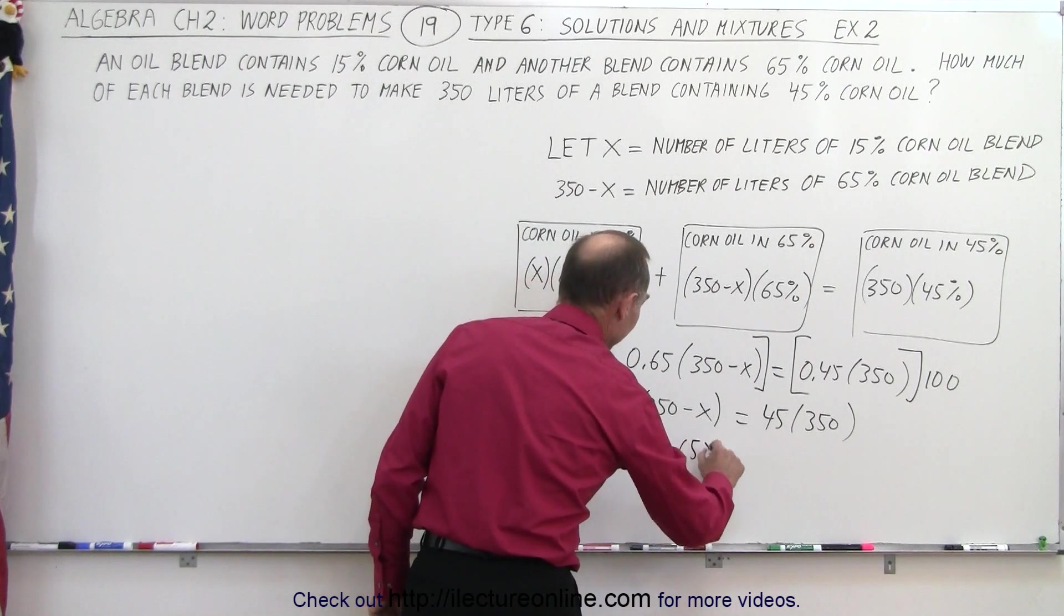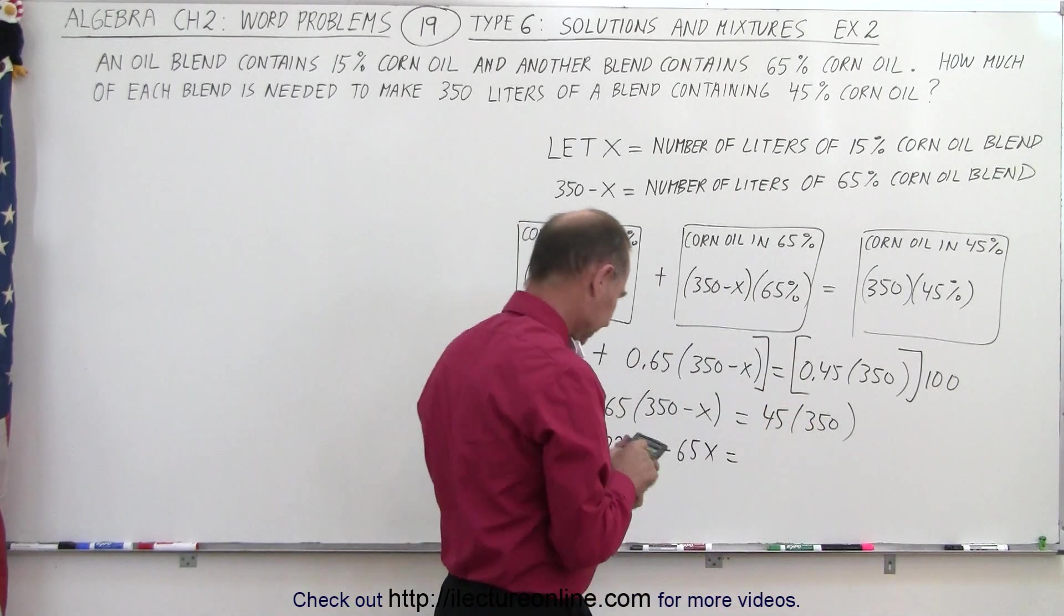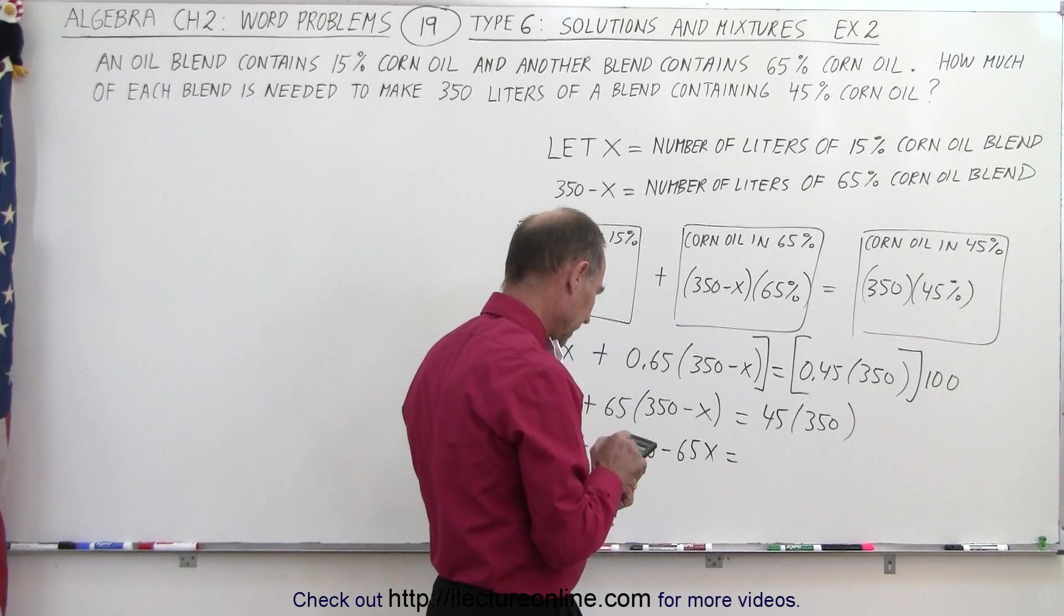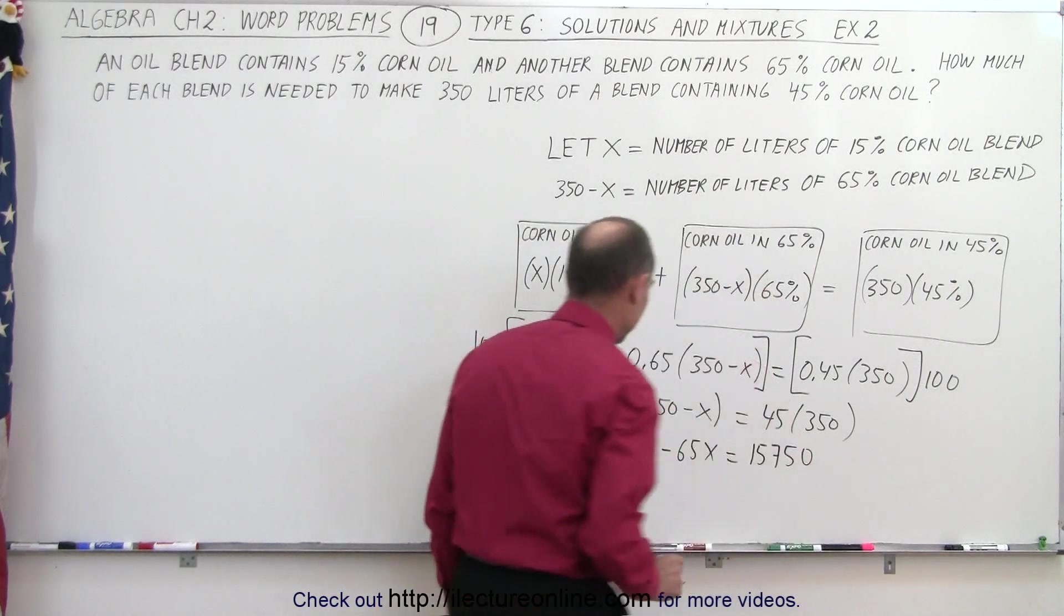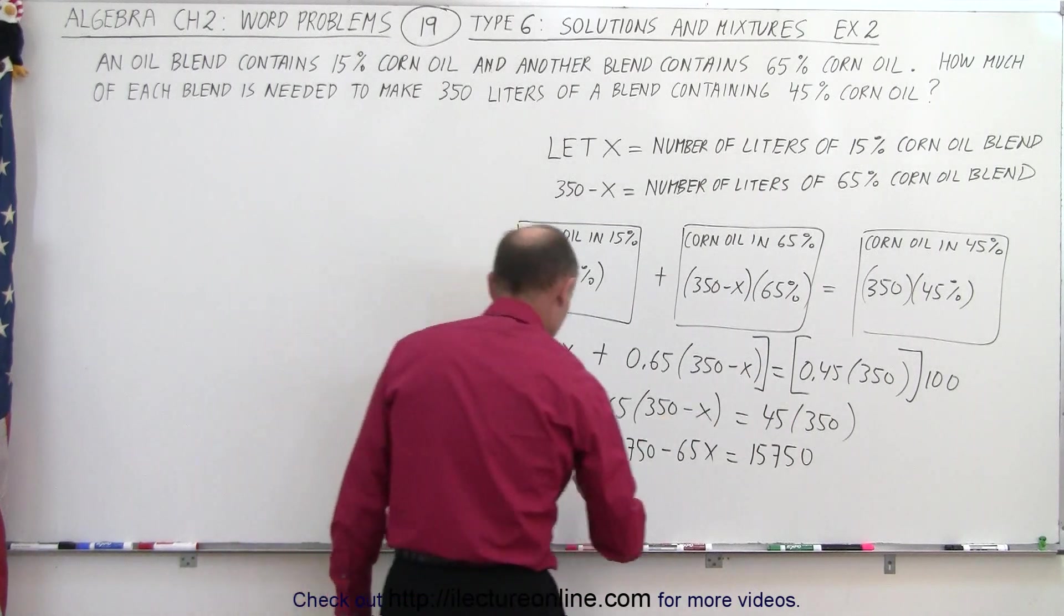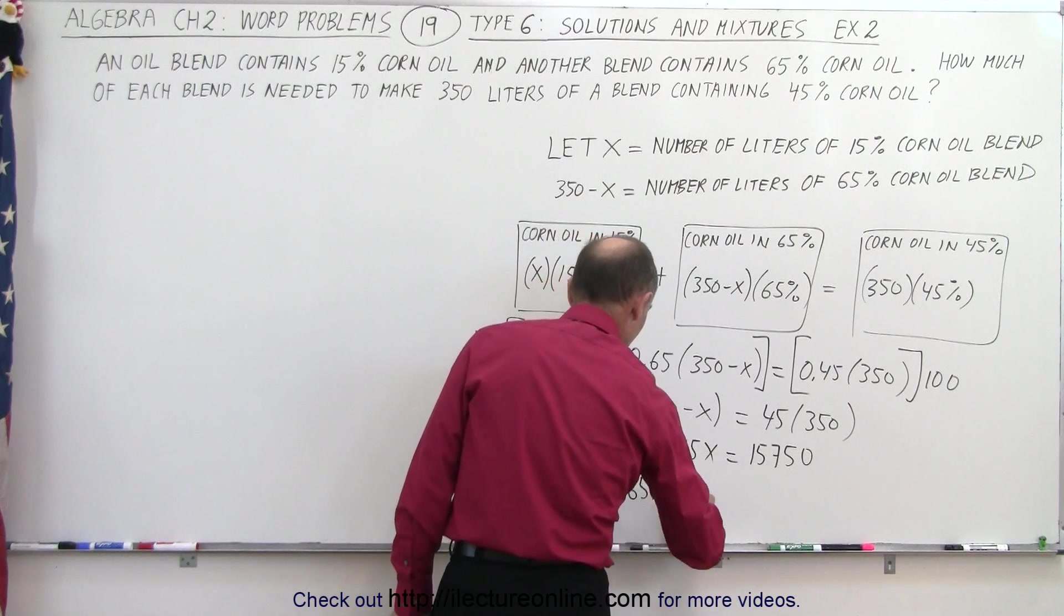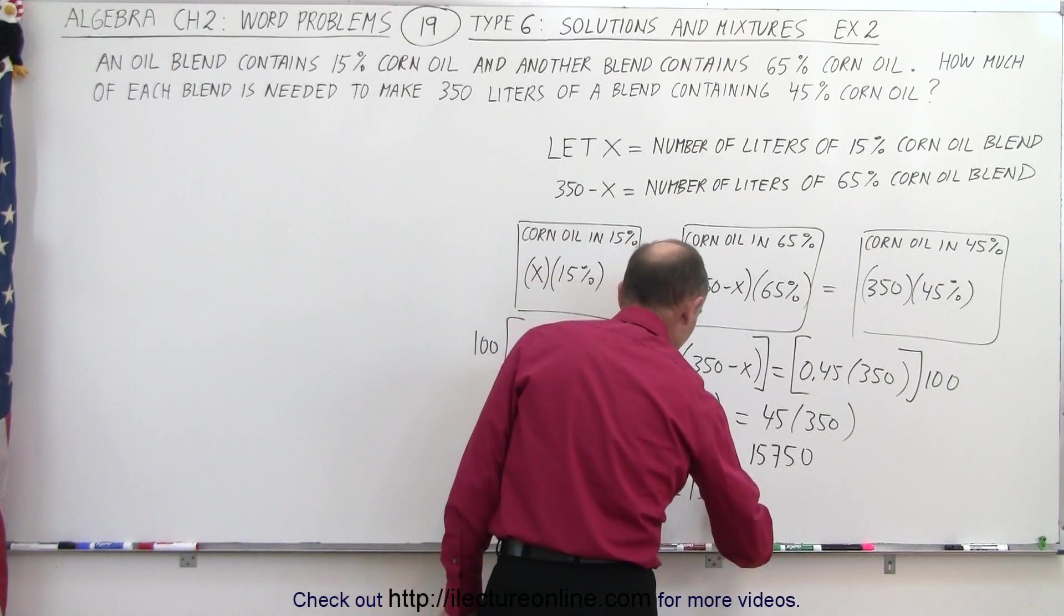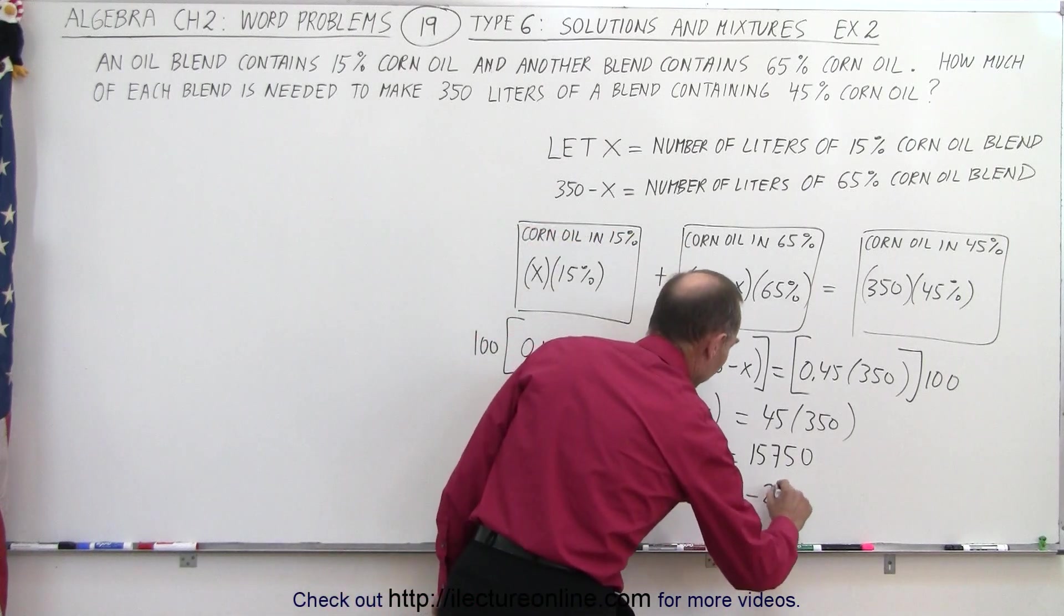Minus 65x is equal to 45 times 350. That's 15,750. Now we want all the x's on one side, all the numbers on the other side. So we end up with 15x minus 65x is equal to 15,750 minus 22,750.